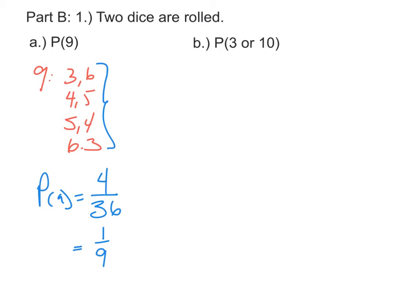When we're going to find the probability of getting a 3 or a 10, we should first think about all the ways we can get a 3 — that's with a 1 and a 2, or a 2 and a 1. And also think about all the ways you can make a 10: with 4 and 6, 5 and 5, or 6 and 4.